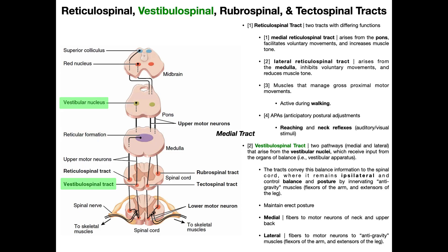The second tract we're going to talk about is the vestibulospinal tract. This also has two pathways — a medial and a lateral — and they both arise from vestibular nuclei, which are mainly in the pons. You can see the vestibulospinal tracts descending down from the vestibular nucleus, going through the medulla into the spinal cord, and out to skeletal muscle. You'll notice that for both the reticulospinal and vestibulospinal tracts, the innervation of skeletal muscles is ipsilateral — the reticular formation and vestibular nucleus are on the same side as the skeletal muscle they ultimately control.